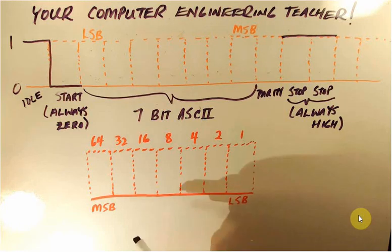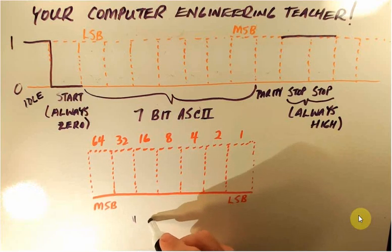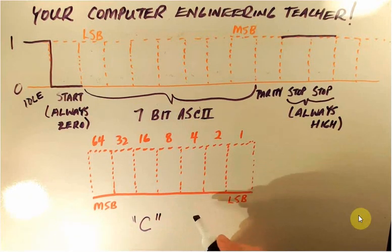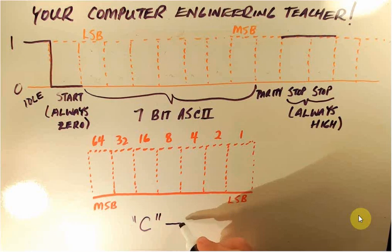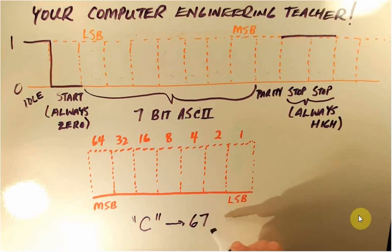Specifically, if we strike the letter capital C. Like we said, if we look in the ASCII table, you're going to see that it's represented by the decimal number 67.